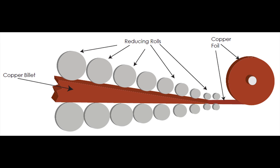Many times rolled copper is called rolled annealed copper, but that may not be the most appropriate term depending on whether the copper actually went through an annealing process. A more appropriate way to describe this copper would be rolled wrought copper.